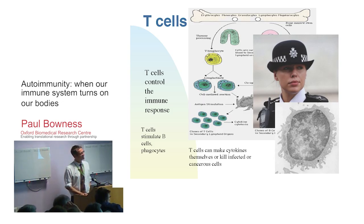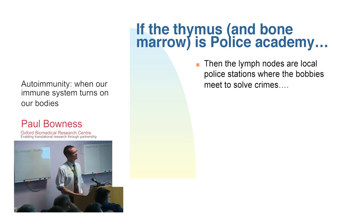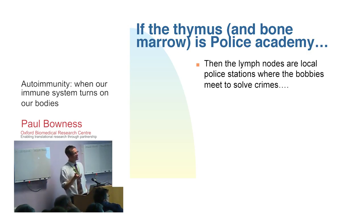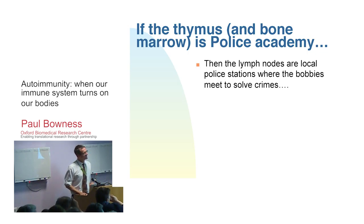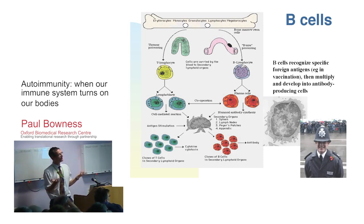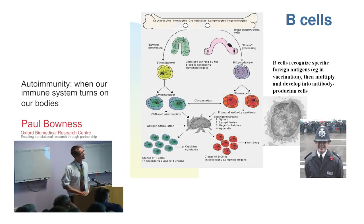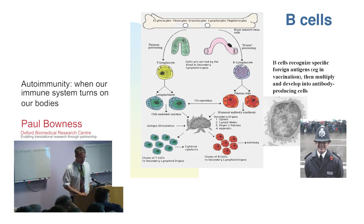The T cells need the thymus academy because they need to decide whether what they're recognizing is our self or something foreign - and that's actually a really difficult target. Once trained up, these policewomen circulate around the community and go to the local police stations - our lymph nodes would be a local police station. When your lymph nodes are swollen, they're filling up with lots of policewomen and dogs all coming to solve whatever crime's gone on. The B cells are actually important for making antibody-producing cells - they're the ones that develop and make antibodies.